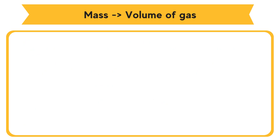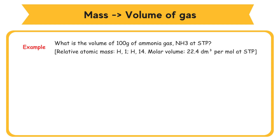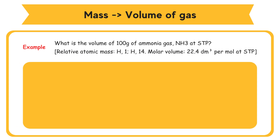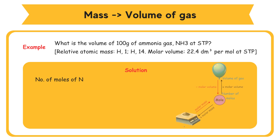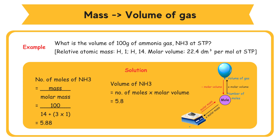Convert from mass to volume of gas. Example: What is the volume of 100 grams of ammonia gas, NH₃, at STP? Relative atomic mass: H = 1, N = 14. Molar volume = 22.4 dm³/mol at STP. Solution: Number of moles of NH₃ = mass ÷ molar mass = 100 ÷ (14 + 3 × 1) = 100 ÷ 17 = 5.88 moles. Volume of NH₃ = number of moles × molar volume = 5.88 × 22.4 = 131.71 dm³.